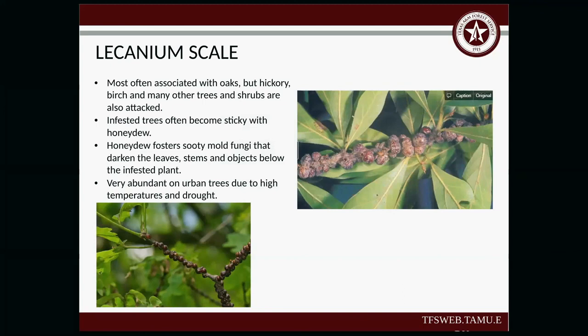Lecanodiaspis scale — mostly associated with oaks, but hickory, birch, and many other trees and shrubs are also attacked. Infested trees often become sticky with the honeydew it produces. Honeydew fosters a sooty mold fungi that darkens the leaves, stems, and objects below. It's very abundant on urban trees due to high temperatures, drought, and other stressors, such as concrete placed over root systems.